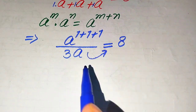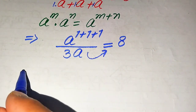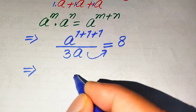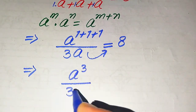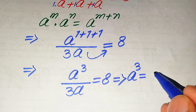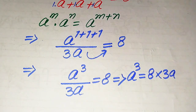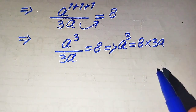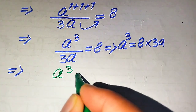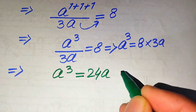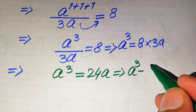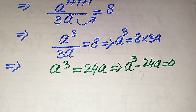We move 3a to the right-hand side. We have a to the power of 3 divided by 3a equals 8. Moving 3a to the right gives a cubed equals 8 multiplied by 3a. Simplifying the right-hand side, 8 times 3 gives 24, so a cubed equals 24a.